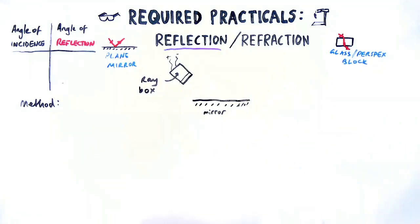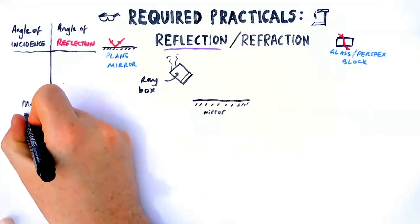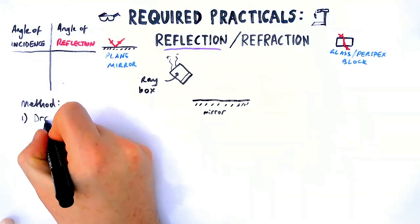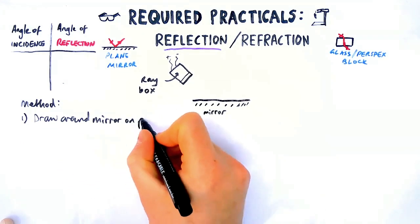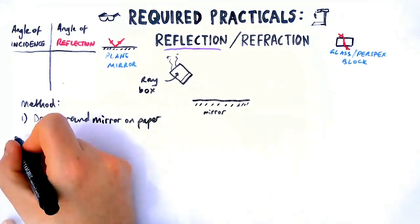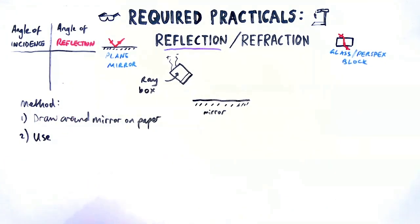This practical comes up a lot. It's a separate science only practical. It's to do with reflection and refraction. Let's do reflection first. Now reflection involves a mirror. The first thing we're going to do is have our ray box set up close to our mirror and we're going to draw around the mirror on a piece of paper.